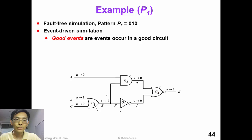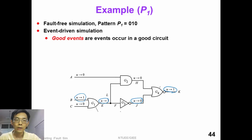Consider this test pattern which is zero, one, zero. We perform a fault-free simulation on the good circuit. We can see that good events are those events that occur in a good circuit. This is a very simple event-driven simulation for a good circuit.